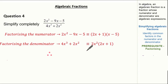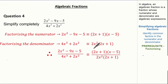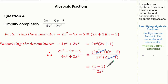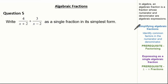Now we can rewrite our algebraic fraction as (2x plus 1)(x minus 5) over 2x squared bracket (2x plus 1). Because we factorized, we can clearly cancel down our factors, giving us (x minus 5) as our numerator and 2x squared as our denominator. So now we know how to simplify algebraic fractions. Let's look at another form of simplification — expressing the algebraic fraction as a single fraction in its simplest form.